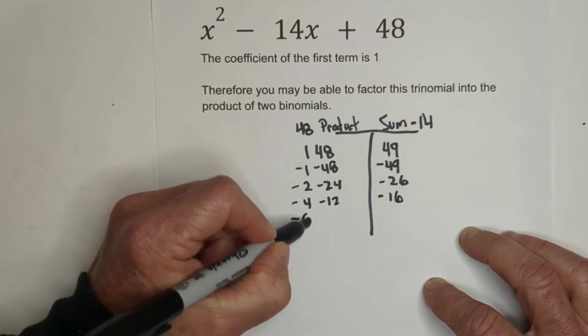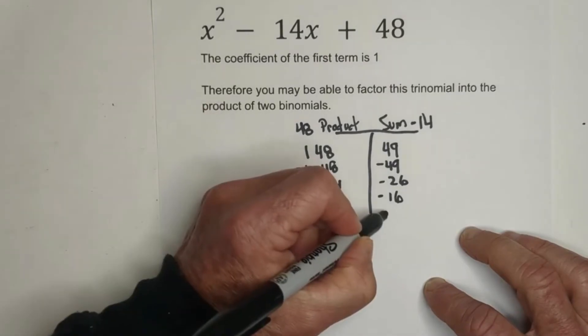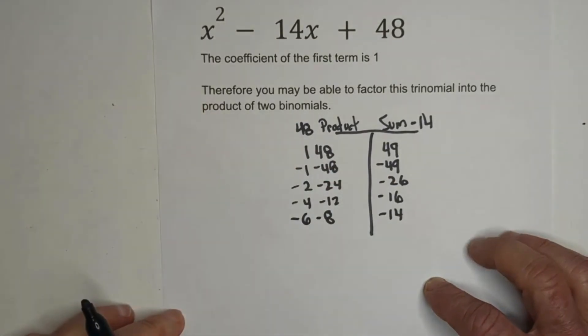So how about negative 6 times negative 8, and that does equal a positive 48, and that gives us a negative 14.